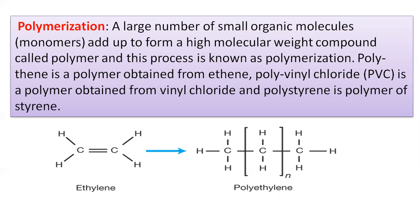Polymerization means a large number of small organic molecules called monomers combine together to form a high molecular weight compound called a polymer, and this process is known as polymerization. For example, ethylene is a monomer, and a large number of ethylene monomers combine to form a long chain of polythene. This is the polymerization property of organic compounds.